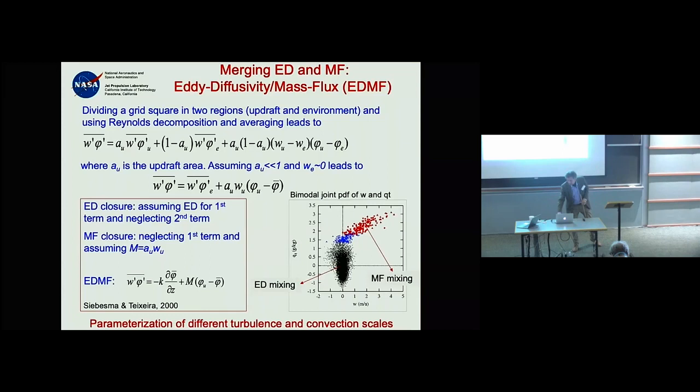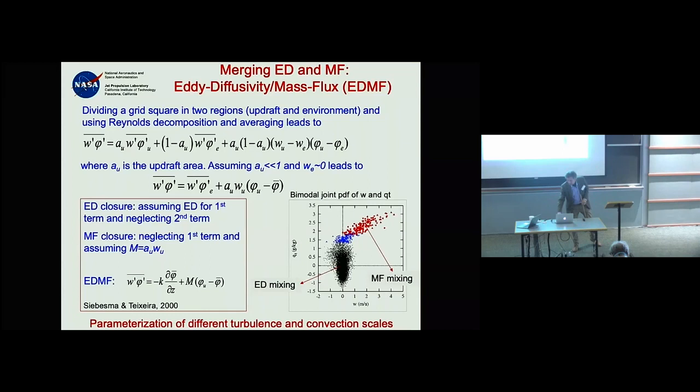The mass flux represents the larger, more active plumes of the boundary layer or troposphere, while eddy diffusivity handles the smaller-scale mixing around them.